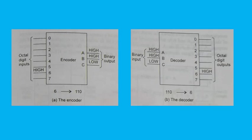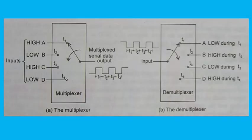Decoding is the inverse operation of encoding. A decoder converts binary coded information ABC to unique outputs such as decimal or octal digits. In the binary-to-octal decoder shown in fig. b, a combination of specific levels on the input lines produces a high on the corresponding output line. The figure illustrates decoding of binary 110 to octal digit 6.